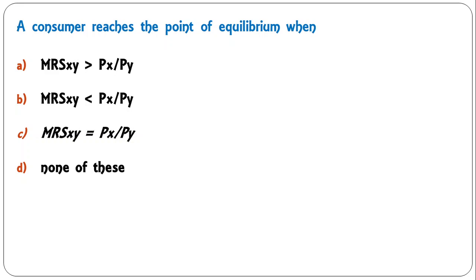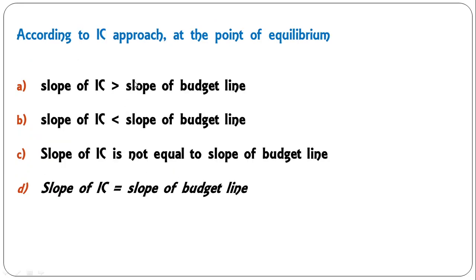Next question — according to the indifference curve approach at the point of equilibrium: slope of IC greater than slope of budget line; slope of IC less than slope of budget line; slope of IC not equal to slope of budget line; or slope of IC equal to slope of budget line? D is the correct answer: at equilibrium, the slope of the indifference curve equals the slope of the budget line.